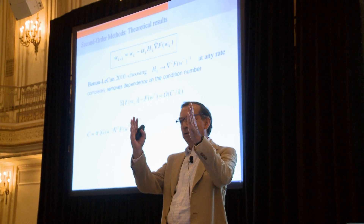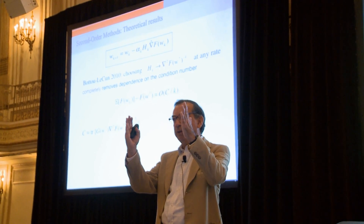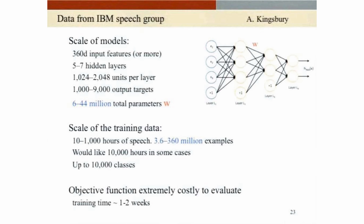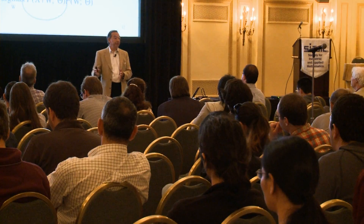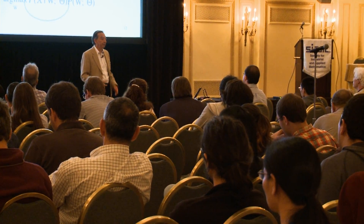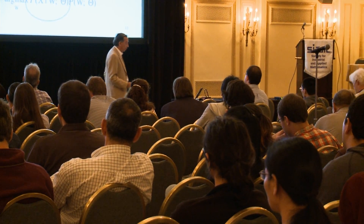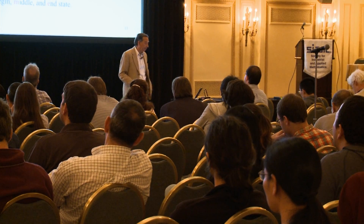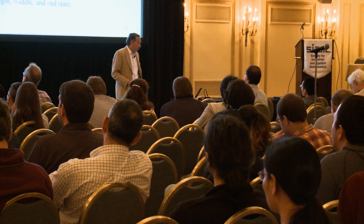In current speech recognition systems, the number of variables and parameters to be determined is around 10 million. The number of training points is on the order of 100 million. That means the objective function to be minimized consists of 100 million terms, and we have to find some 10 million parameters. That's the scale of the problem.